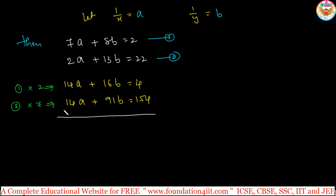You can do subtraction for same sign: 14a minus 14a is cancel. 16b minus 91b is minus 75b, 4 minus 154 is minus 150.